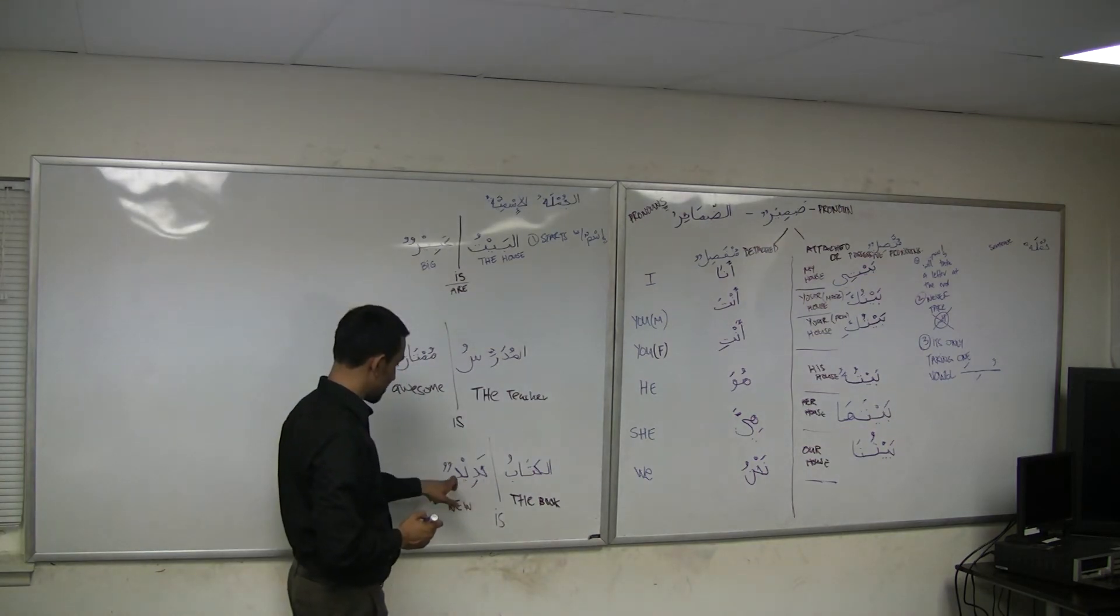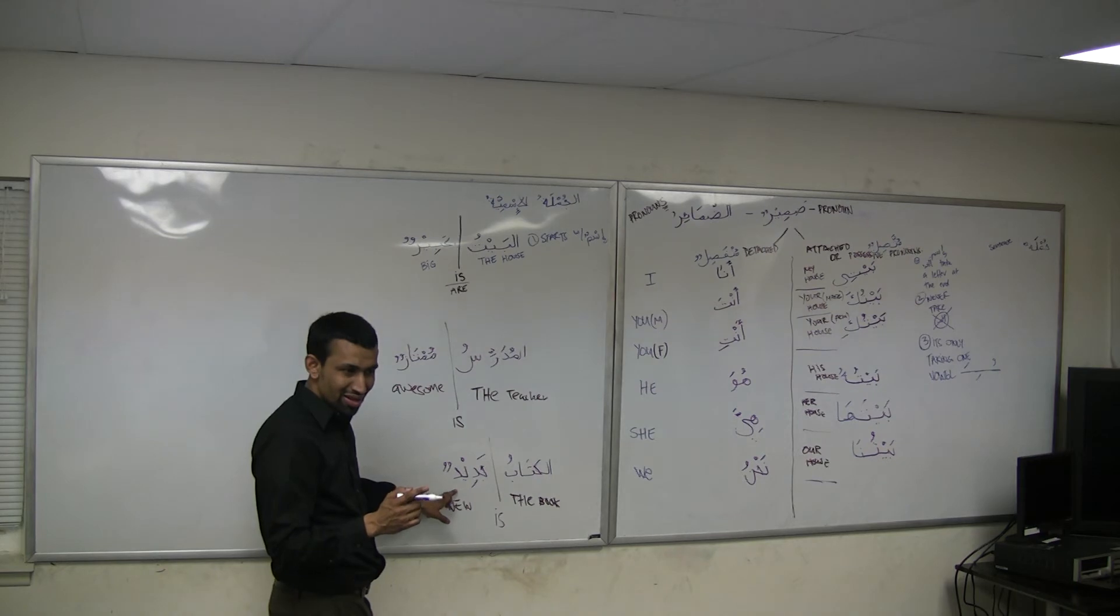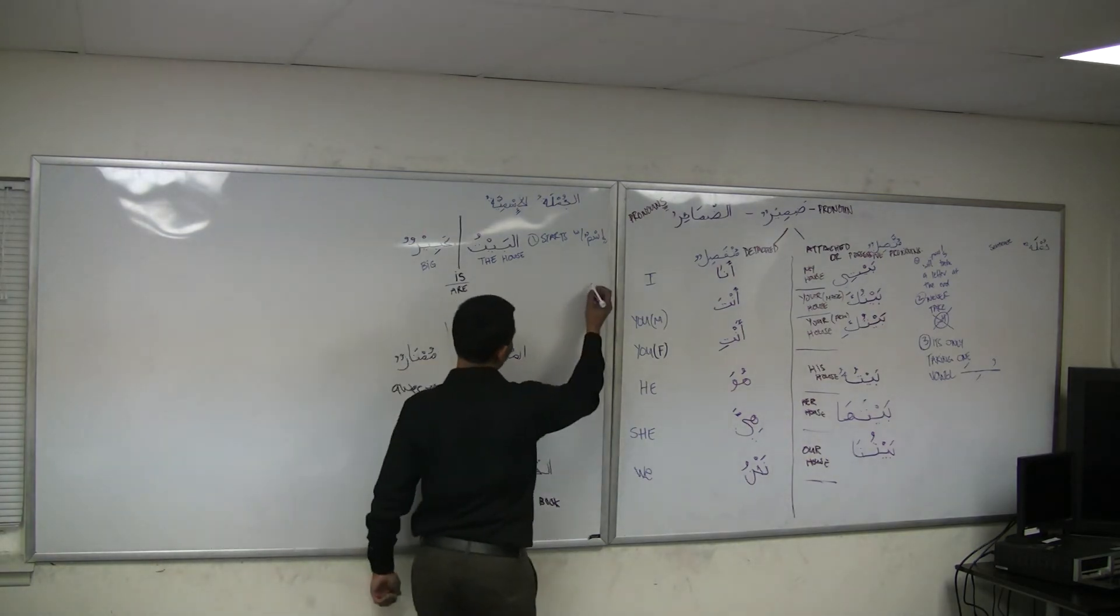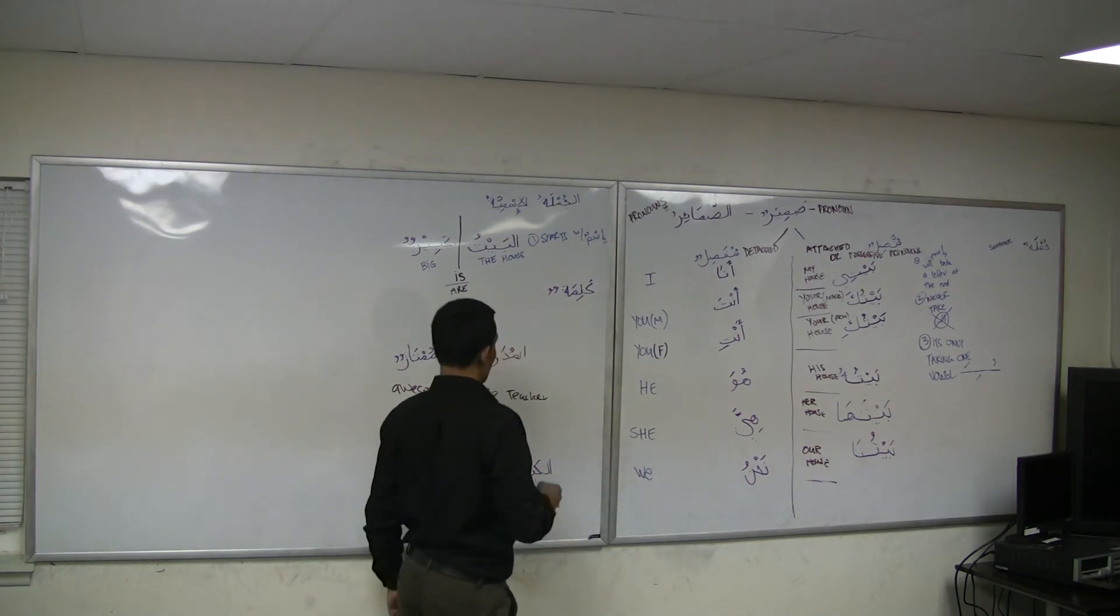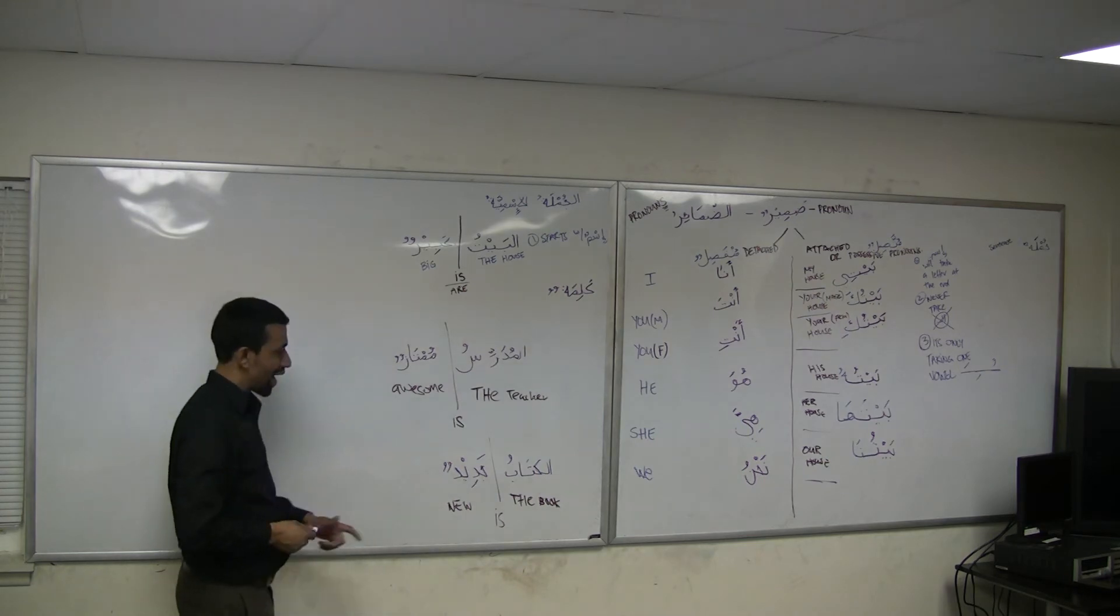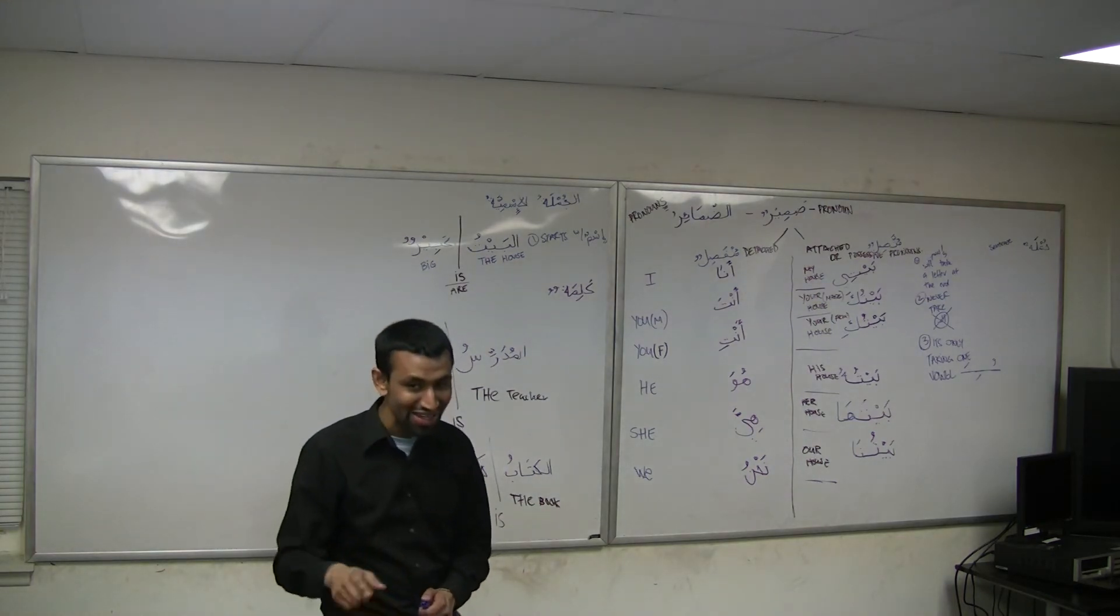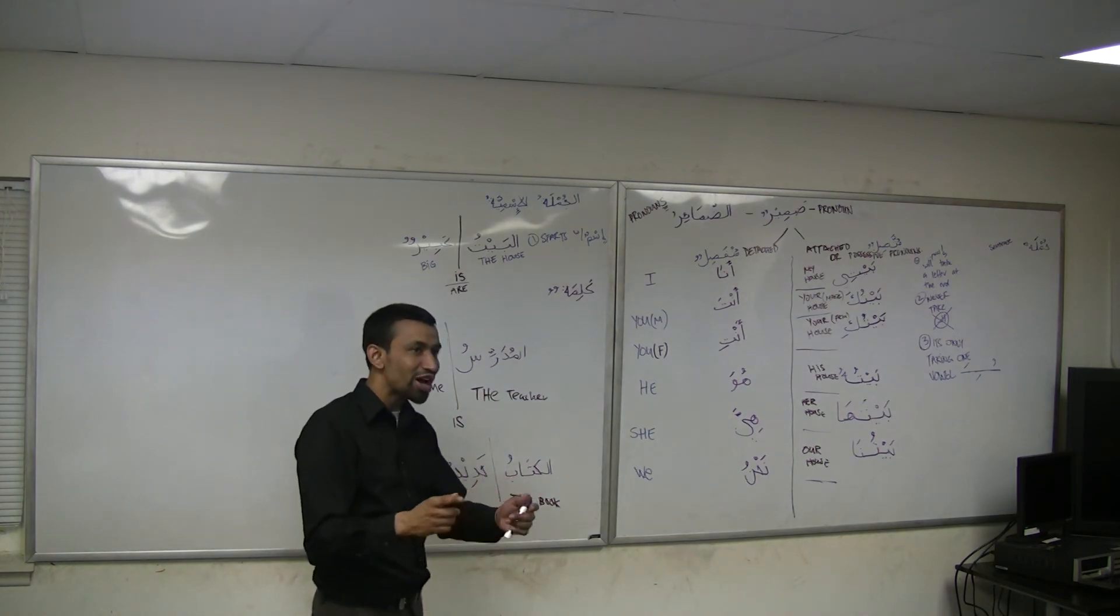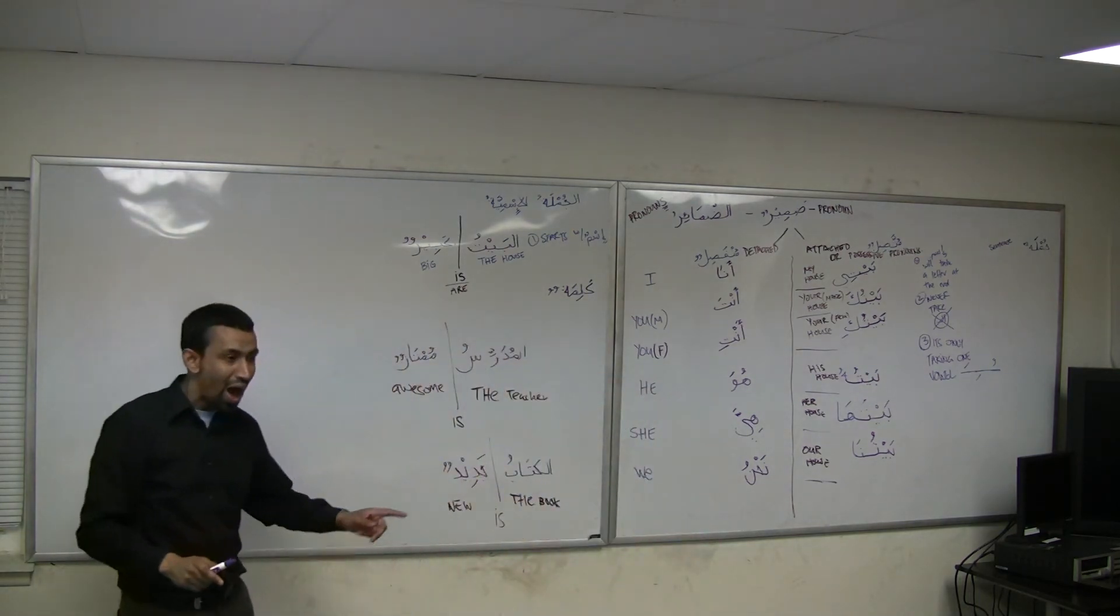Jadidun means new. Is it new though? Is it really a new word? How do we say 'a word'? Kalimah. So how do we say the new word? Al-kalimatu al-jadidah. Which new word? Like a new word. How do I say 'a new word'? Al-kalimatu jadidatun. That's 'the word is new.' See, it was tricky right? Because you're like wait a minute, I said how do you say a new word and you said al-kalimatu jadidatun, which is the word is new. So the question is how does the sentence work exactly?